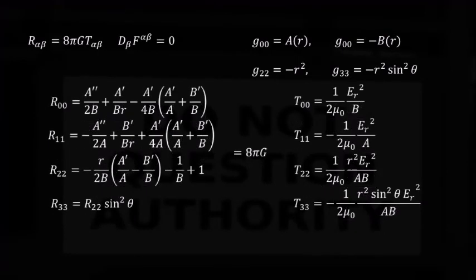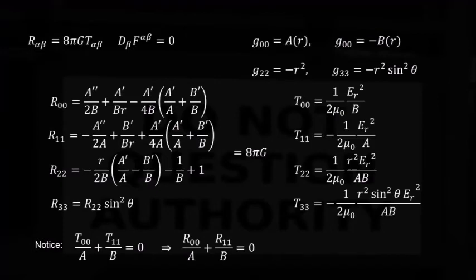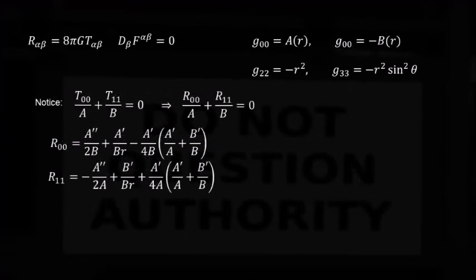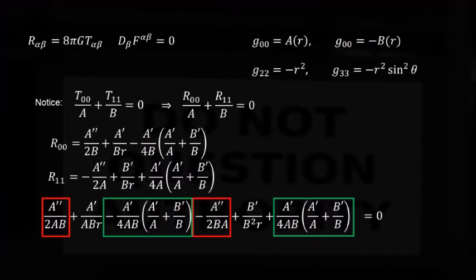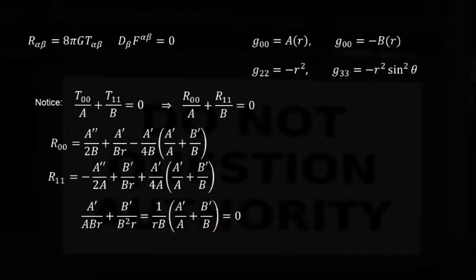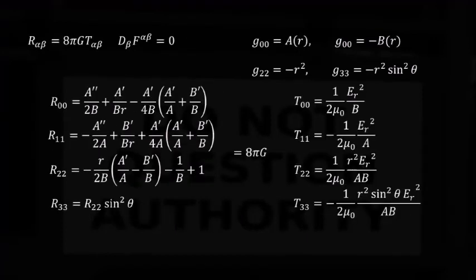First, notice that this expression is true. Which implies that this expression is also true. Which leads to... These terms and these terms cancel out. So we get... Which implies that the derivative of the log of a times b must be zero. Or that a times b must be a constant. We can go back to the Ricci tensor and simplify the third component.